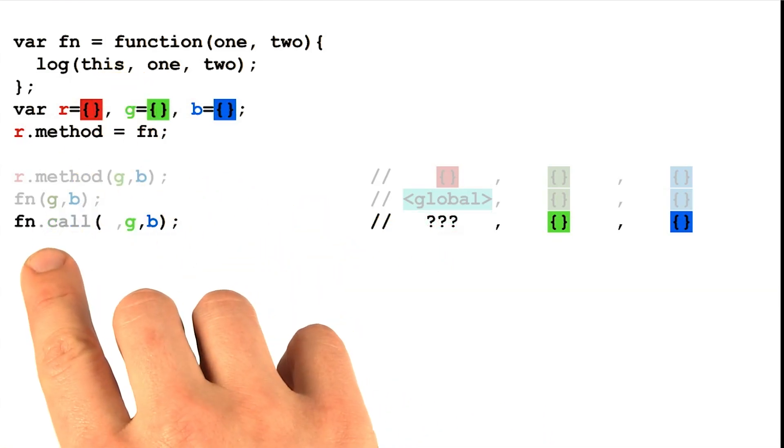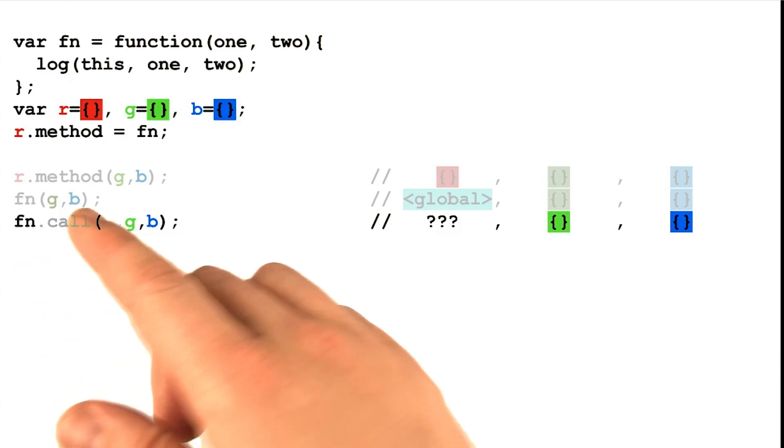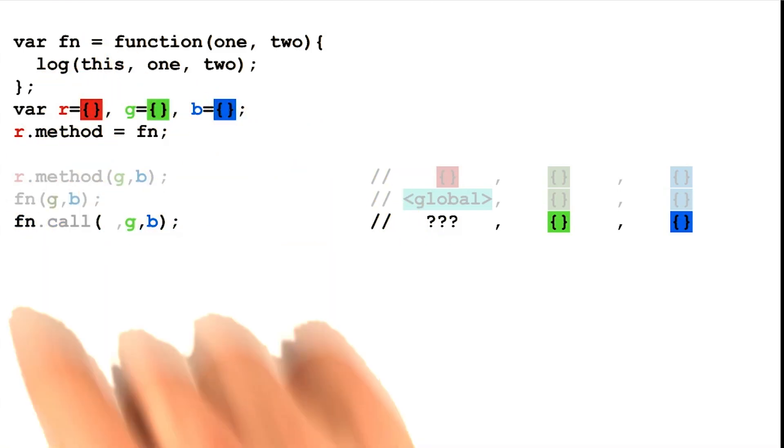By using a function's dot call method, we get to override the default binding to global and override the left of the dot rule. In this case, we'll pass in any value we want and it'll get bound to the keyword this.